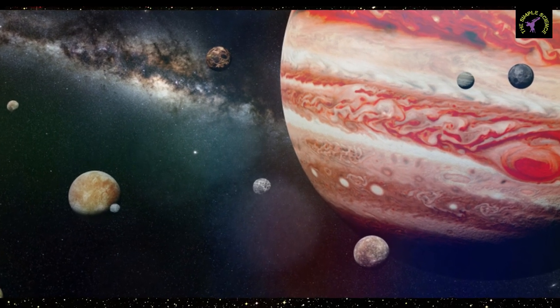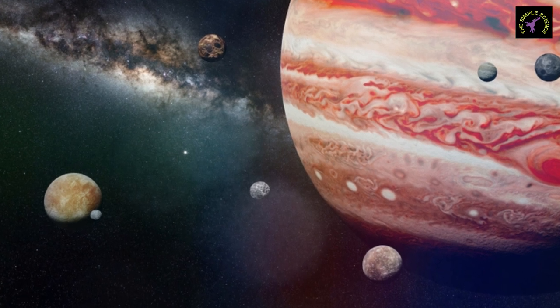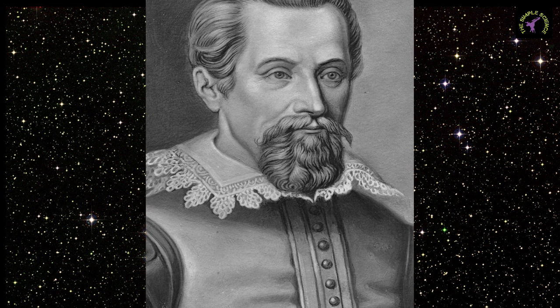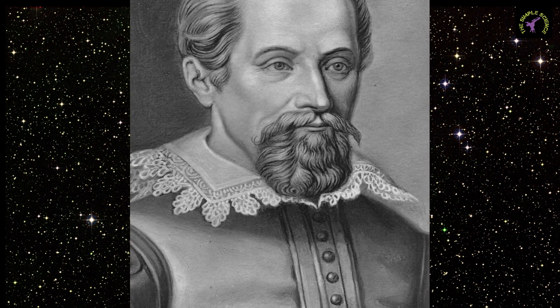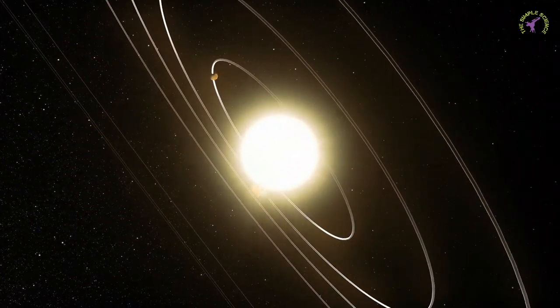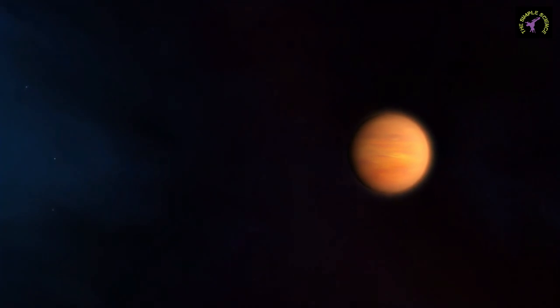Johannes Kepler in 1609 modified Copernicus' theory, suggesting that the planets move in elliptical orbits, not in circular orbits.